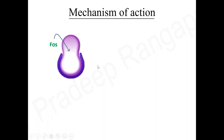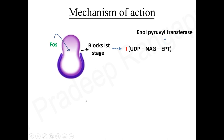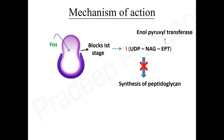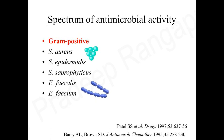The mechanism of action of phosphomycin, like most antibiotics, involves inhibiting cell wall synthesis. The key mechanism targets the first step in cell wall synthesis — the production of peptidoglycans. It blocks this first stage by inhibiting UDP-N-acetylglucosamine enolpyruvyl transferase, which blocks the production of peptidoglycans — the building blocks of the cell wall.